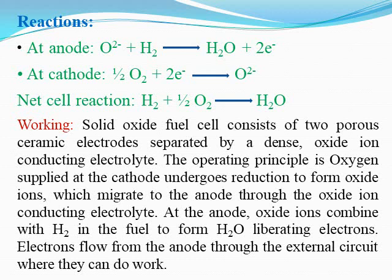At the cathode, oxygen undergoes reduction — it immediately converts to O²⁻. This O²⁻ reacts with hydrogen coming from the anode to form a molecule of water with the liberation of two electrons. At the cathode, half a molecule of oxygen accepts two electrons and generates O²⁻. This O²⁻ combines with hydrogen to form water and regenerate two electrons. The net cell reaction is: H₂ + ½O₂ → H₂O.